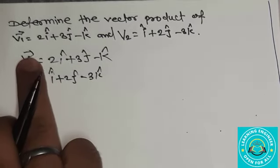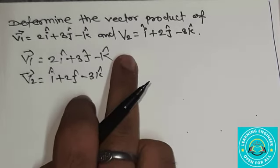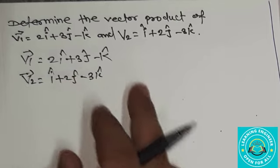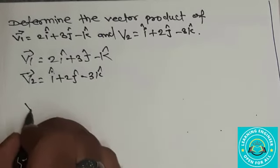Now, ask me product of v1 into v2. When we say product, we always find cross product.